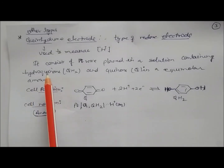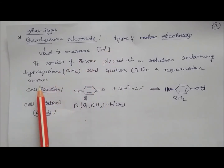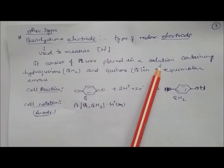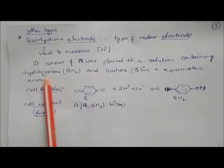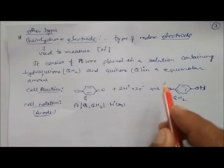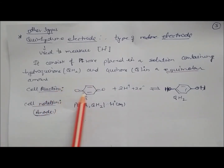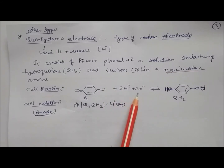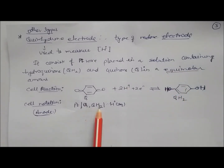Another type of electrode is the quinhydrone electrode, used to measure the concentration of H⁺ ions. It consists of a platinum wire placed in a solution containing hydroquinone (QH₂) and quinone (Q) in equimolar concentrations. The cell reaction involves quinone undergoing reduction to give hydroquinone. The anodic representation is: Pt | Q, QH₂ | H⁺(aq).